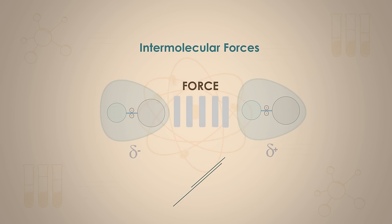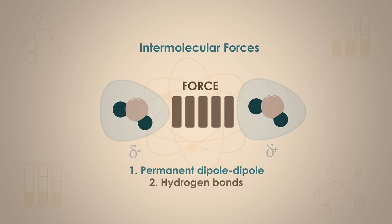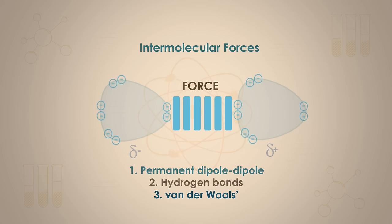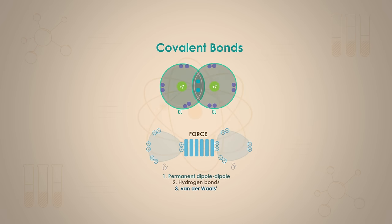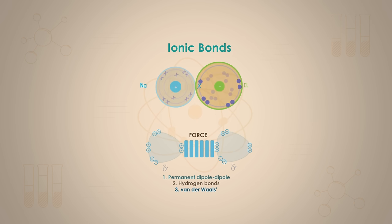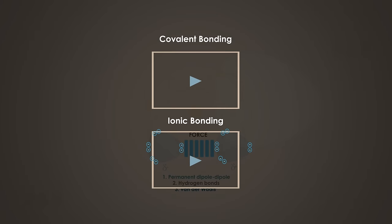The three types are: 1. Permanent dipole-dipole forces, 2. Hydrogen bonds, and 3. Van der Waals forces. All of these three forces are very much weaker than ionic or covalent bonds, which bind atoms and ions together in elements and compounds.